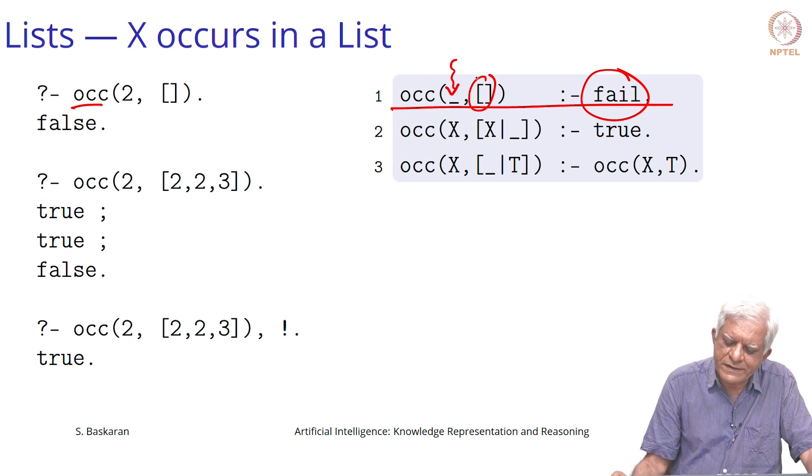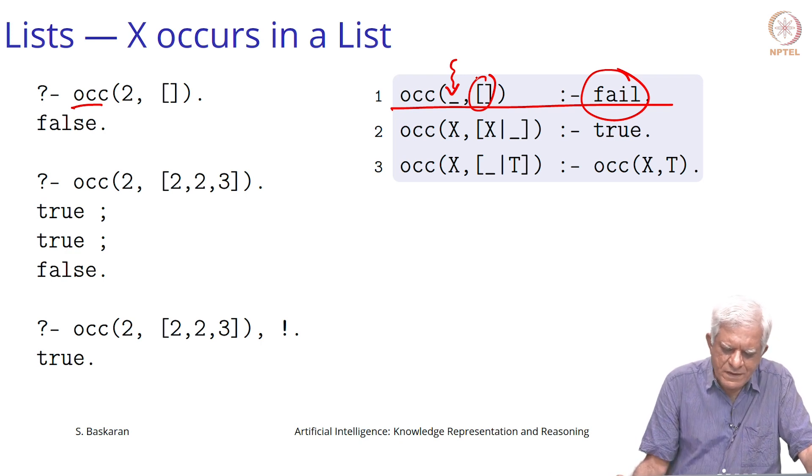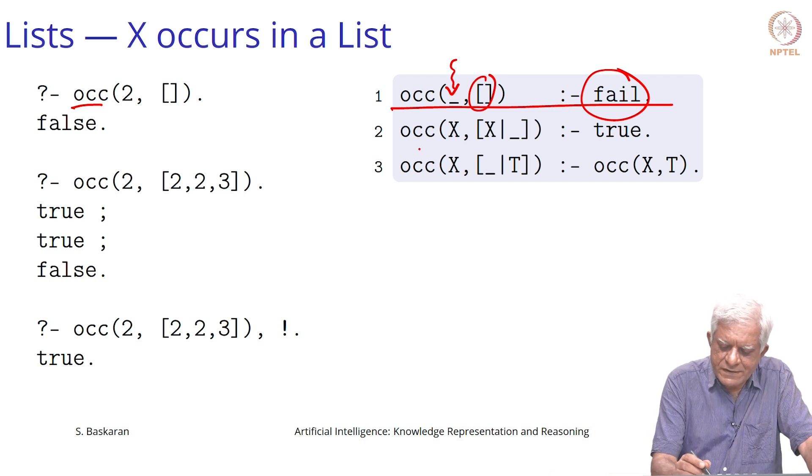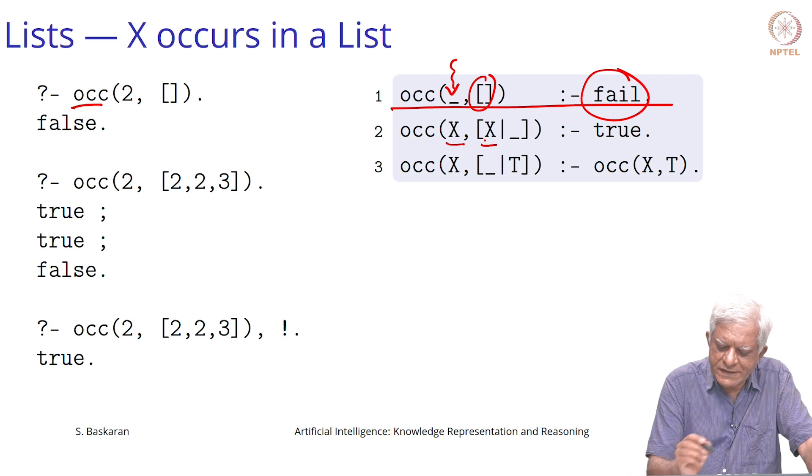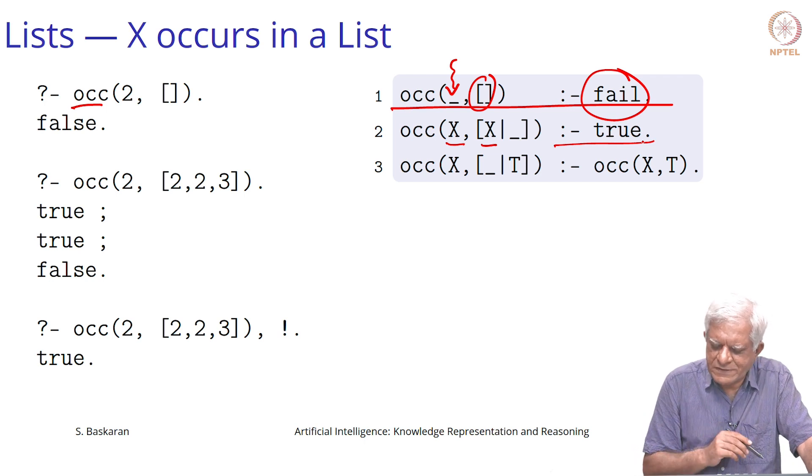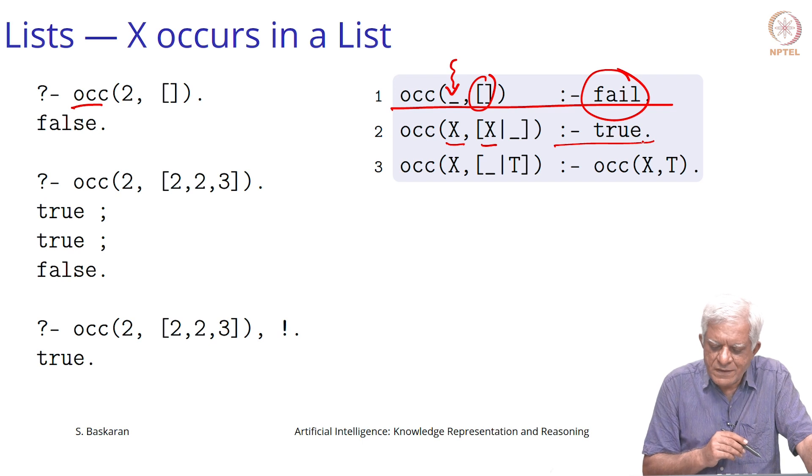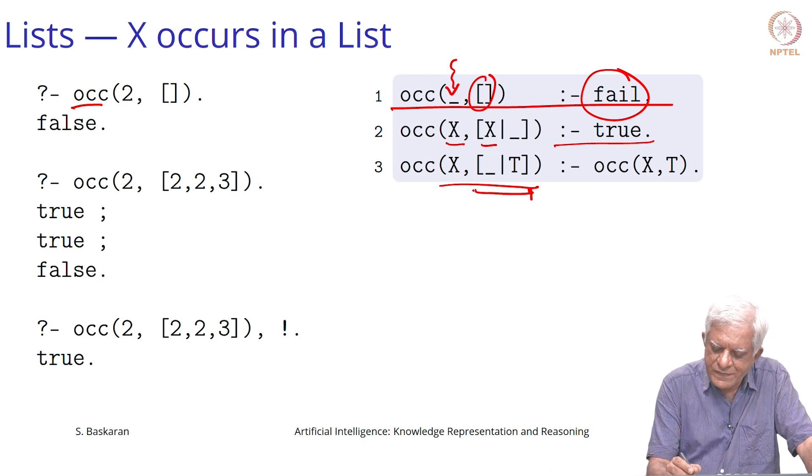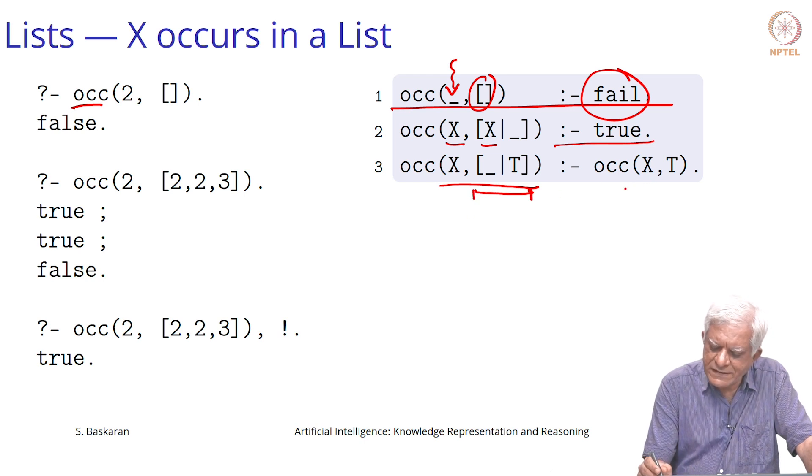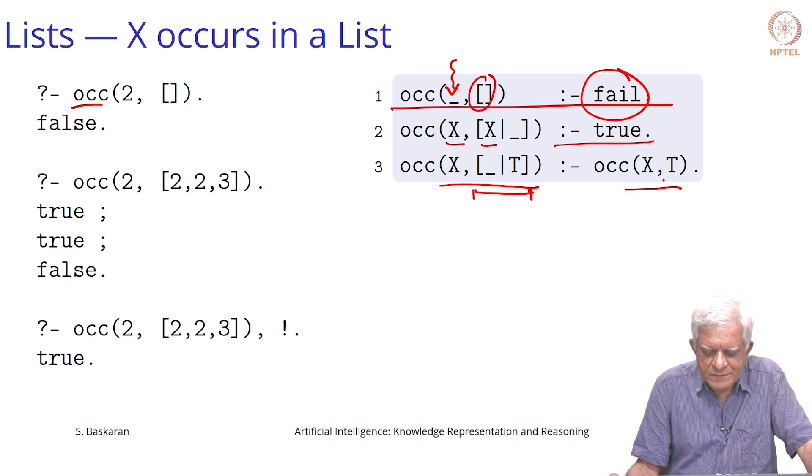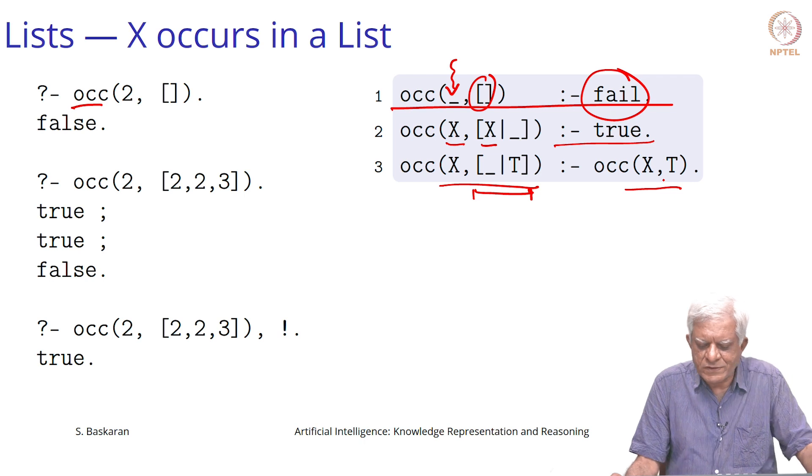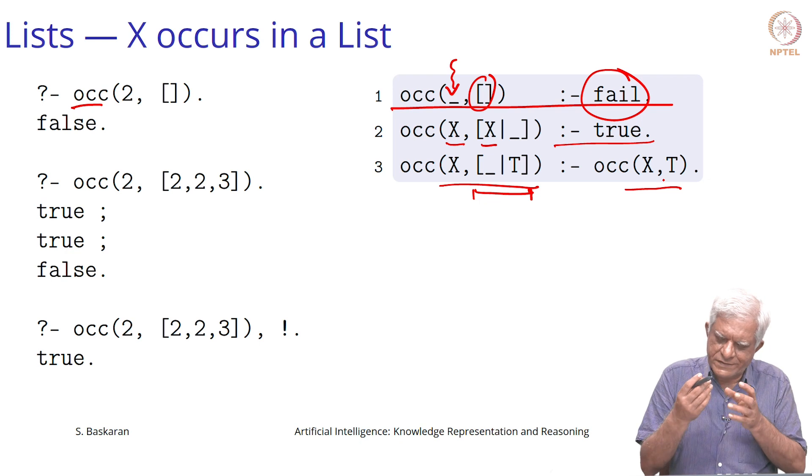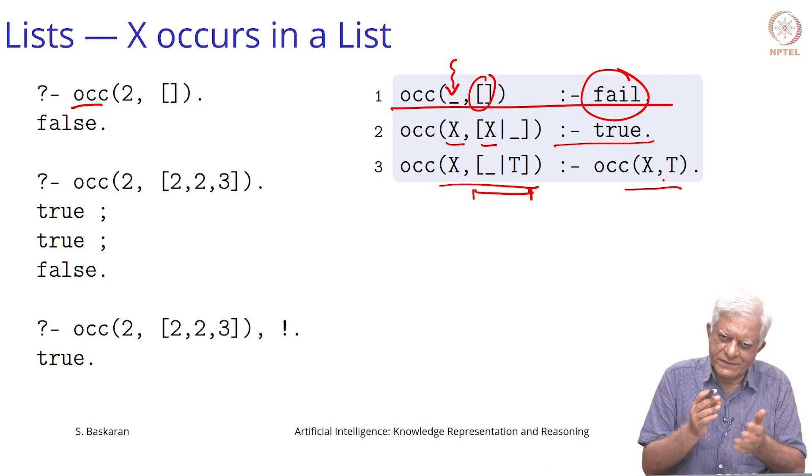It is never used in running the listing. Otherwise, it says that x occurs in a list if x is the first element in the list. Again, this true is redundant. You can leave it out as we have done in base clauses earlier. But if it is not in the first element, then occurs x in this whole thing is a list is true if x occurs in the tail of the list. To determine whether an element is there in the list, look at the head element. If it is there as the head element, then say yes it is there in the list. Otherwise, look in the tail element.